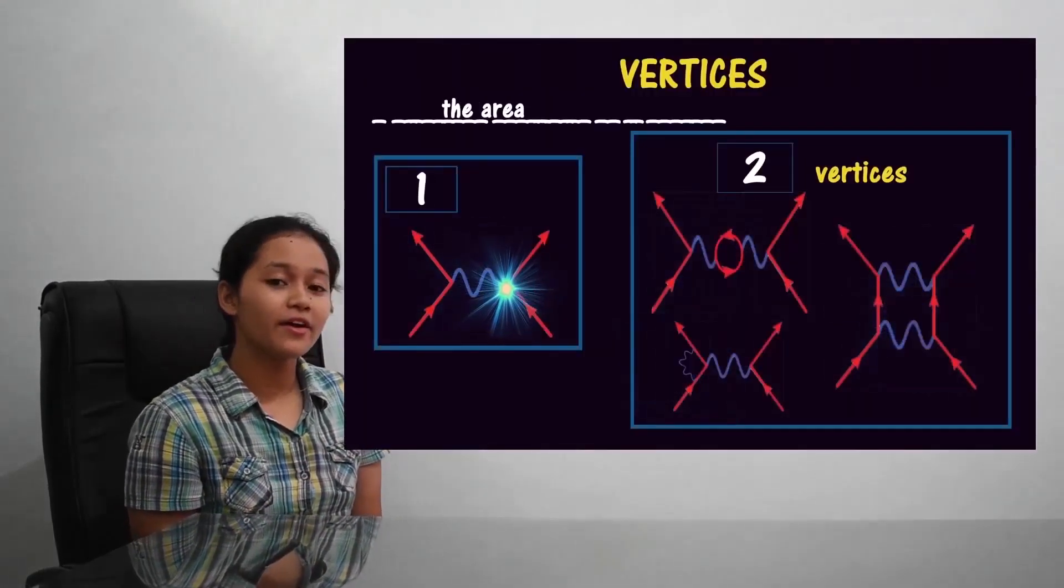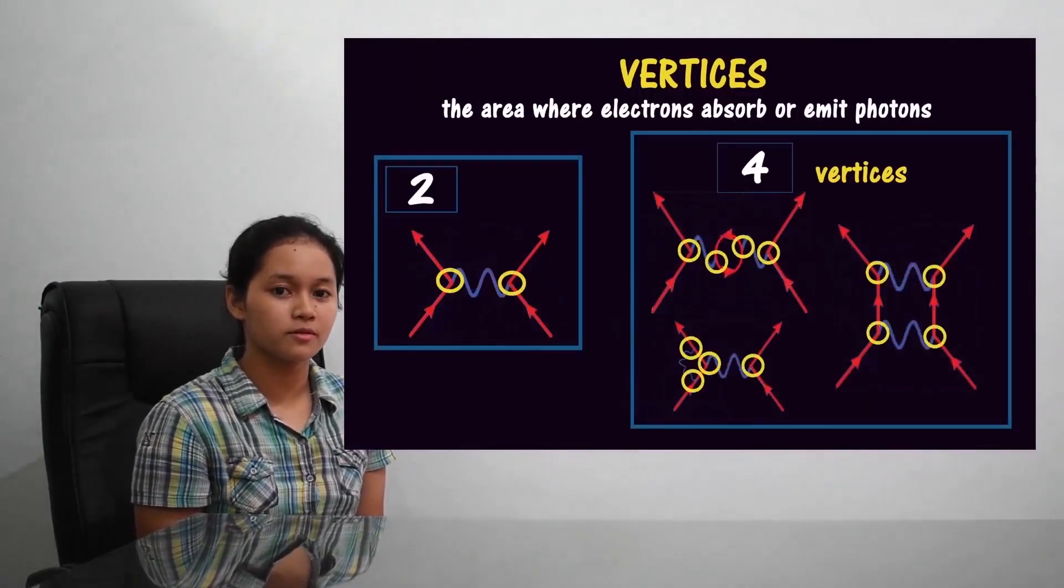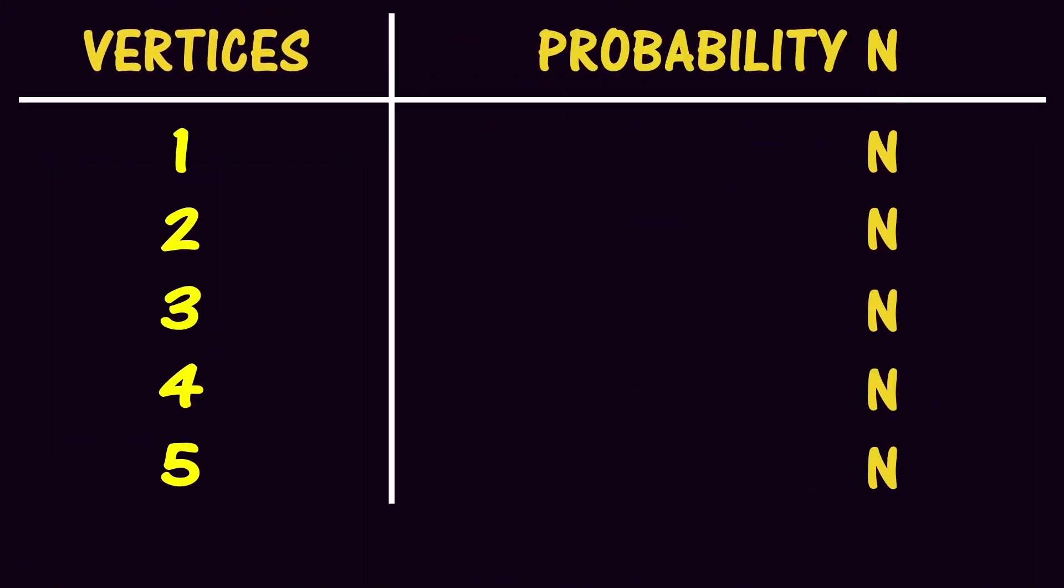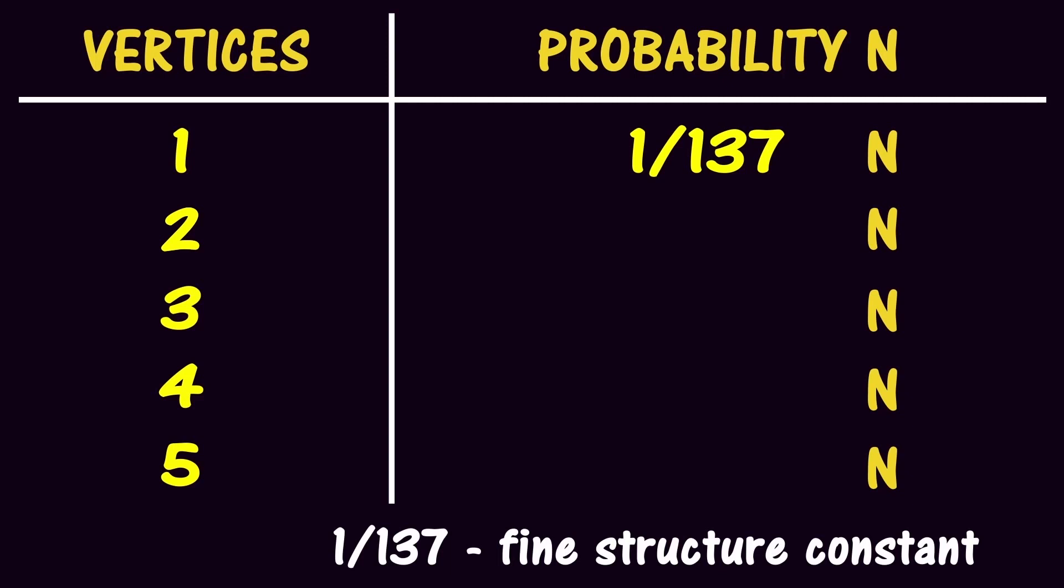Like folds in the paper, diagrams have vertices. The area where electrons absorb virtual photons. How many vertices a diagram has is also how much is its probability to happen. Specifically, one vertex contributes approximately 1 over 137. That's the fine structure constant.